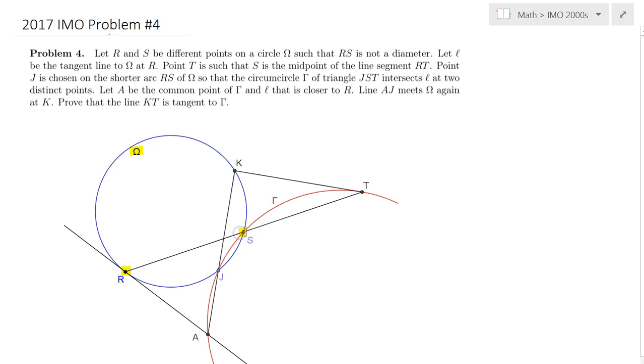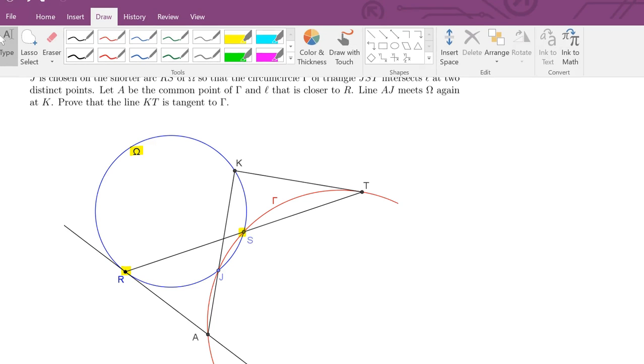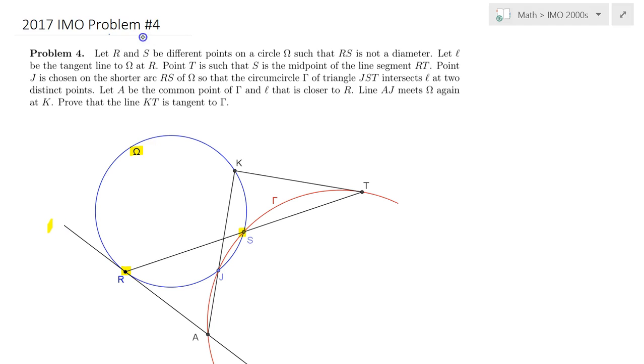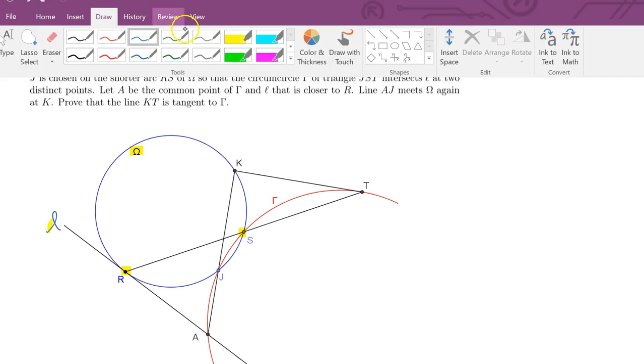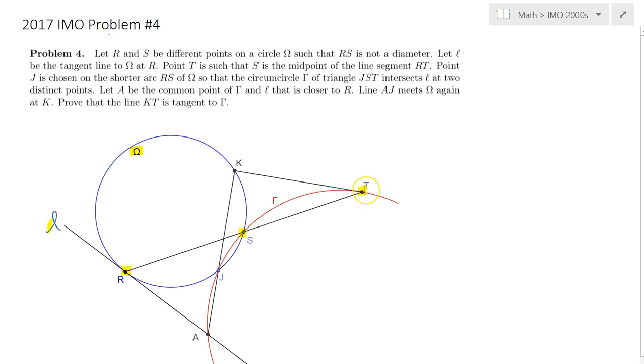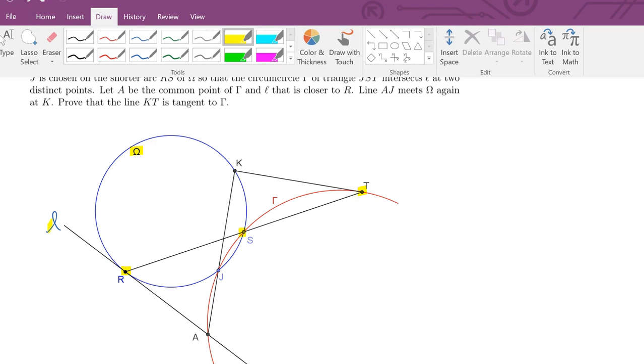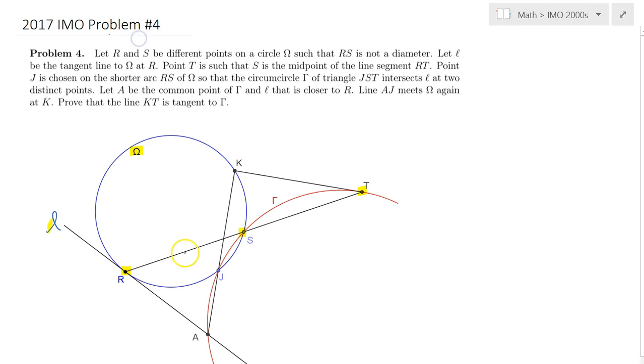We are told to draw the tangent line to the circle Omega at the point R and label it as L. Next we construct the point T such that RS is equal to ST, so T is on ray RS beyond S.